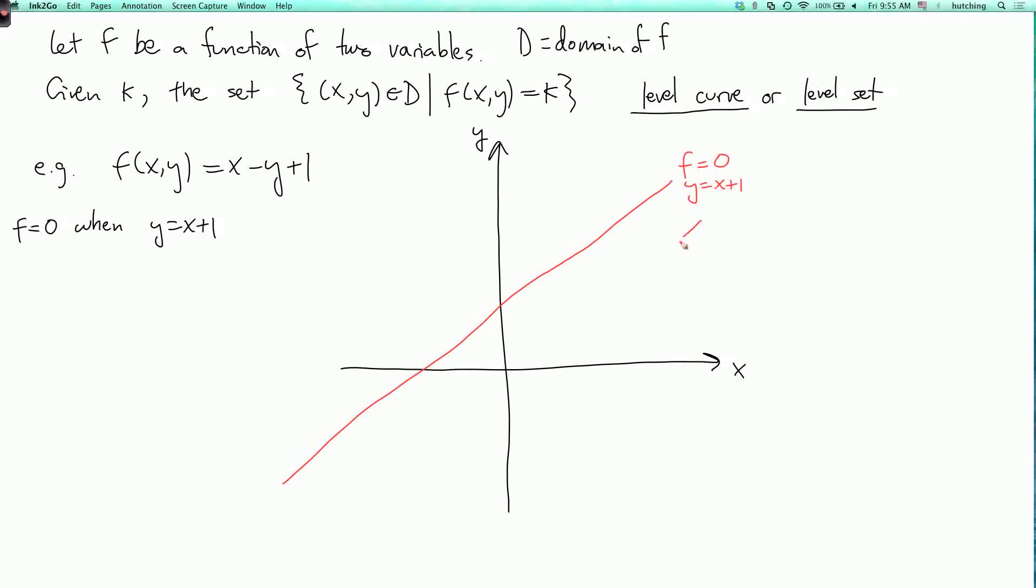On the line y equals x, f is equal to 1. On the line y equals x minus 1, f is equal to 2. And so on. So if we draw the level sets where the values are integers, you don't have to pick integers, but you can, then we're going to get some equally spaced parallel lines. That's what's going to happen with a plane that's not horizontal. So if you have a plane that's not horizontal, or vertical, then the level sets of the corresponding function are going to be equally spaced parallel lines.